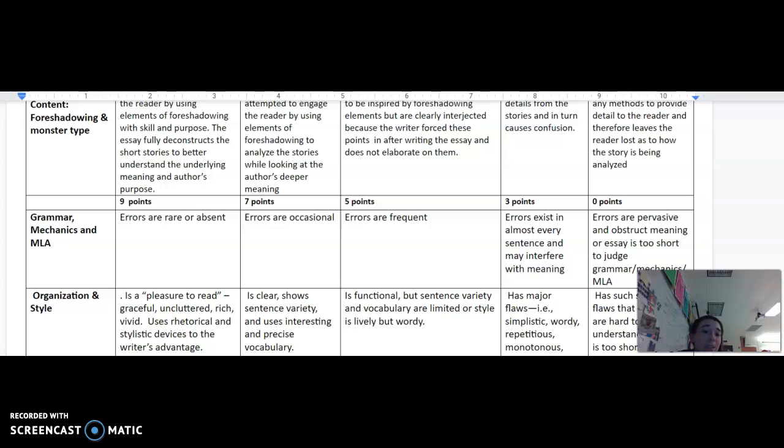Alright, organization and style. It is a pleasure to read, graceful, uncluttered, rich, and vivid get you a full 9 points. 7 points, it's clear, it shows sentence variety and uses interesting and precise vocabulary. 5 points, it functions but sentence variety and vocabulary are limited. And 3 points has major flaws, so it's simplistic and kind of wordy but often unclear. And 0 points has such severe flaws that it's hard to really judge the essay.